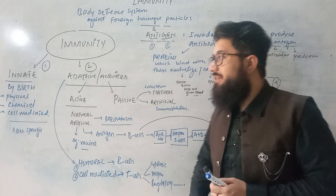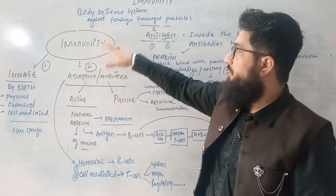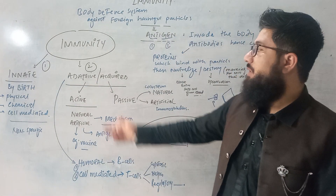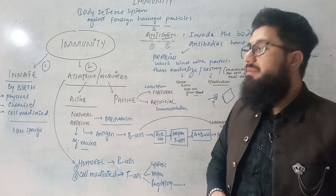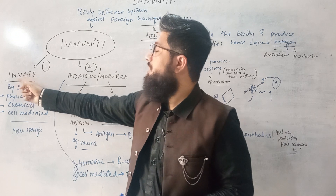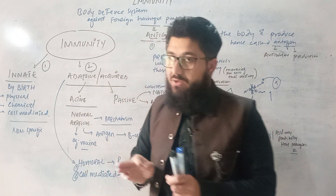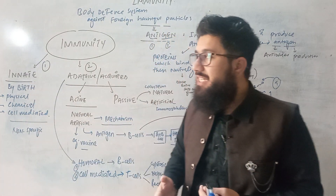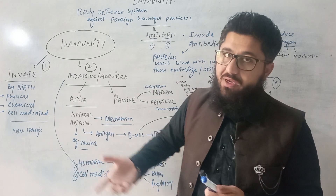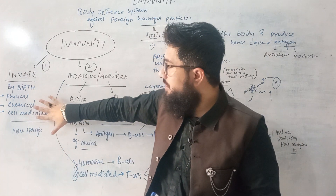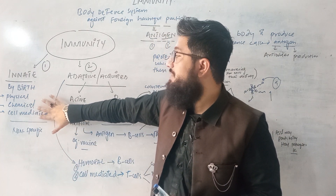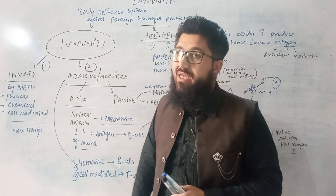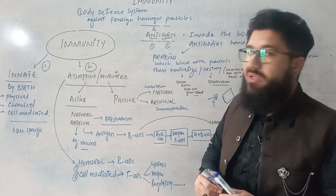Now let's talk about immunity types. We have two types of defense systems: number one, innate immunity; number two, adaptive or acquired immunity. The word 'innate' means by birth — from 'neonate.' Innate immunity is actually produced in the body by birth; it is given to us at birth.